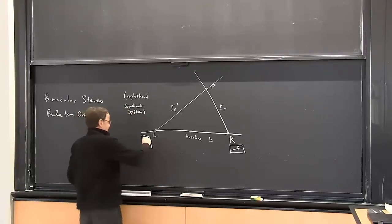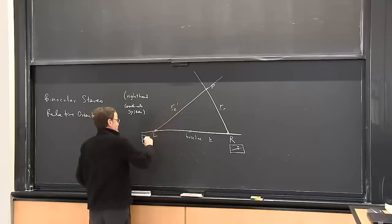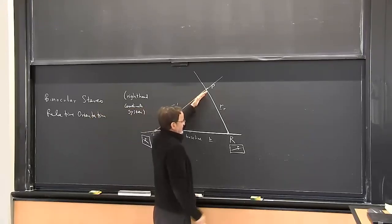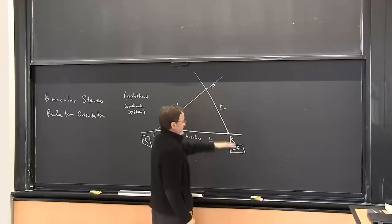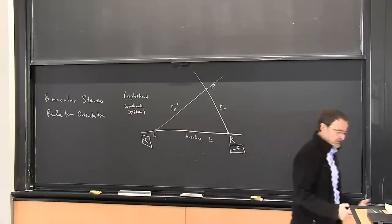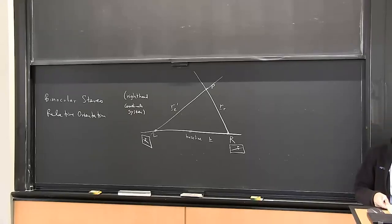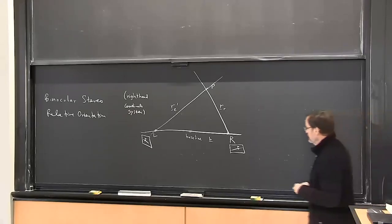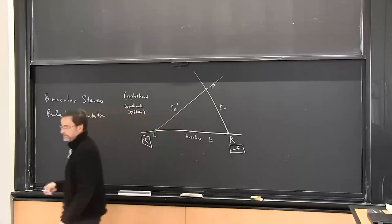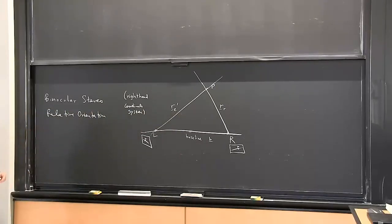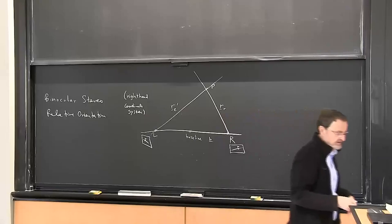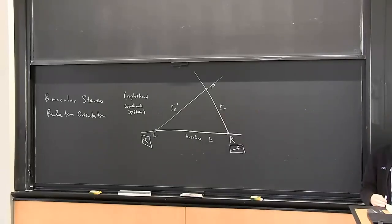Think of it another way: suppose I go into the left image and use an interest operator like SIFT or SURF, and I define a point. I know the world point has to be along that straight line. Then I project that straight line into the right camera — and I just get a straight line in the right camera. So one conclusion is that when we search for correspondences, we only have to search along a line rather than all over the right-hand image. That gives us a measure of disparity which we can turn into a distance measurement.